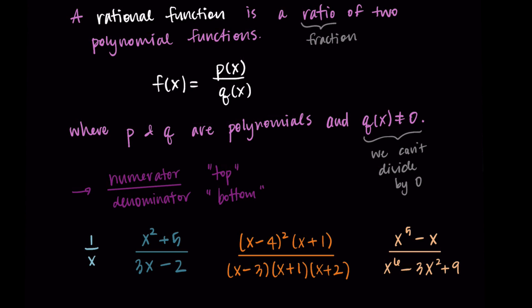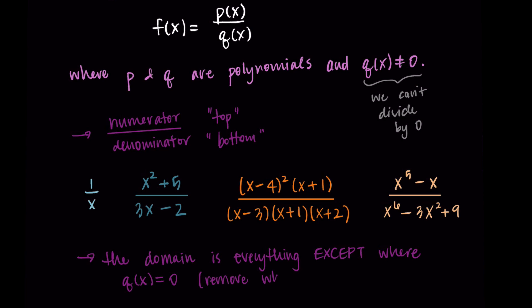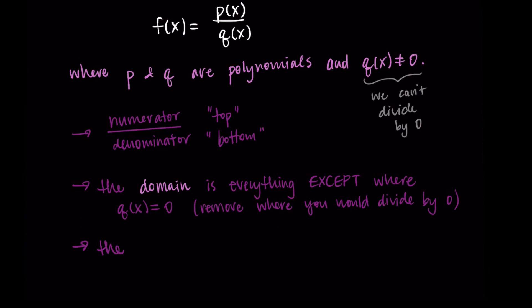We'll go through the graphs of each of these examples, but I'll talk quickly about the domain and range. Because we can't divide by zero, the domain is going to be all real numbers except for where q of x, the denominator, equals zero. We take all real numbers and remove the places where we would be dividing by zero. The range really depends on the rational function — there's no specific rule, we have to figure it out depending on the function itself.